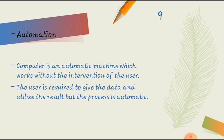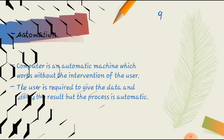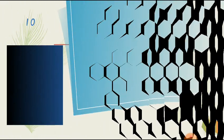Therefore, user is required to give the data and utilize the result. But the process is automatic. This is the reason why computer is called automatic machine. These are the few characteristics that I have included in this presentation. Which are also the abilities of the computer. Which makes the computer more powerful in today's world.